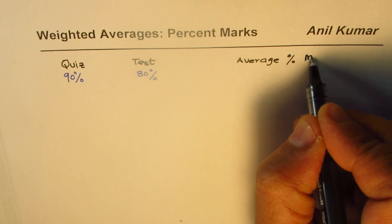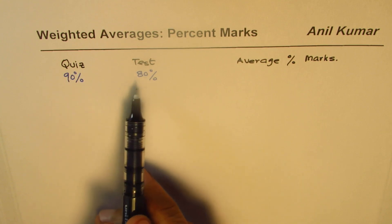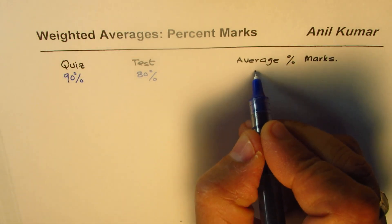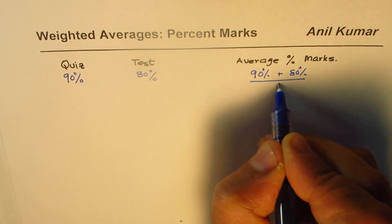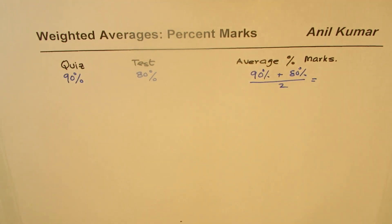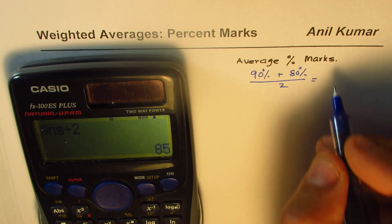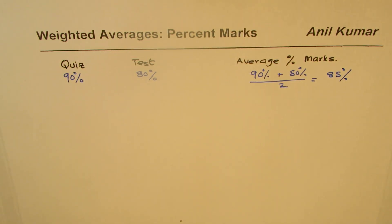We need to find the average percent marks. If in the quiz you had 90 percent and in the test you had 80 percent, the average is simple — we just add them up and divide by 2. So it is 90 percent plus 80 percent divided by 2, since there are two things we added: quiz and test. 90 plus 80 equals 170, then divide by 2, we get 85 percent.